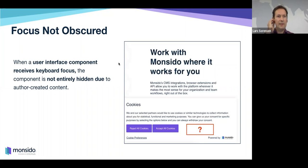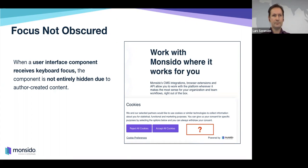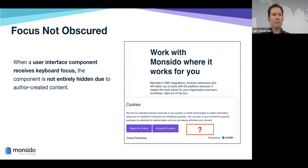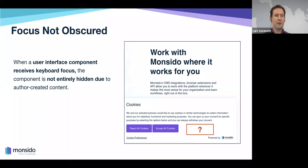The next criterion is Focus Not Obscured. Still talking about keyboard focus — when navigating your website by tabbing from link to link, if you have an overlay window or something popping up on your website, your keyboard focus could disappear behind that content. You don't want that to happen because then you simply don't know where you are with your keyboard focus if it's hiding behind other content on your website.